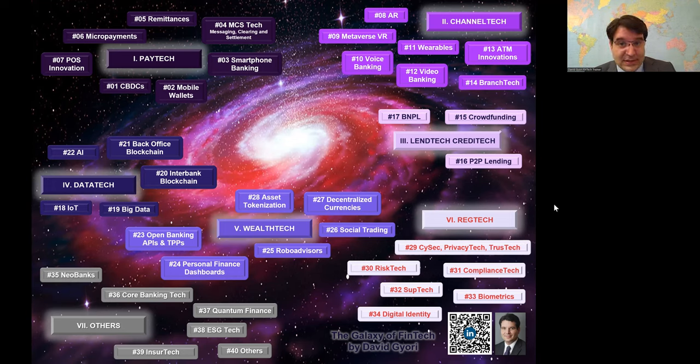REGTECH is our sixth star, and REGTECH consists of six planets. Planet number 29 is a composite cyber security, privacy tech, and trust tech. Think through all these 40 technologies I am listing on this slide. The entire galaxy of financial technology is full of risks. Every single new technology has its own set of new risks rising. And we have to somehow understand, analyze, measure, and mitigate these risks, even regulate them. So the Basel committee will have a lot of work in the upcoming new paradigms.